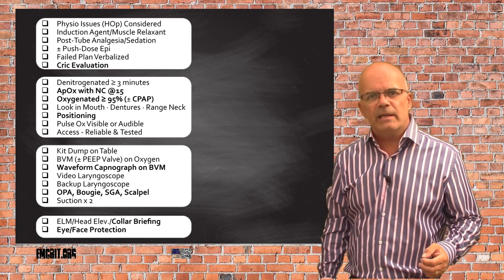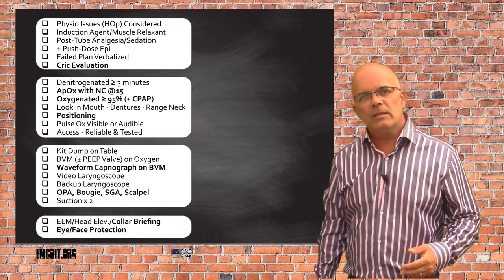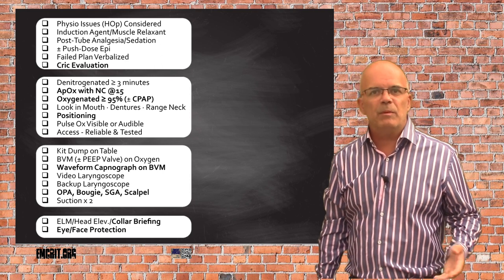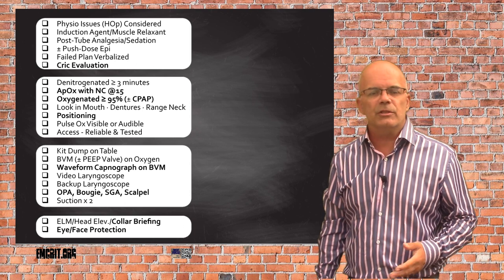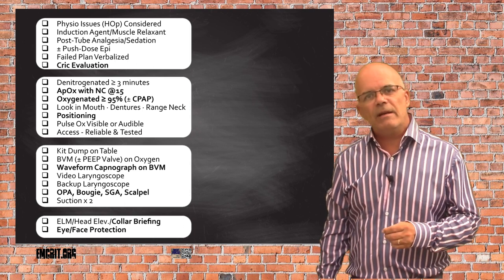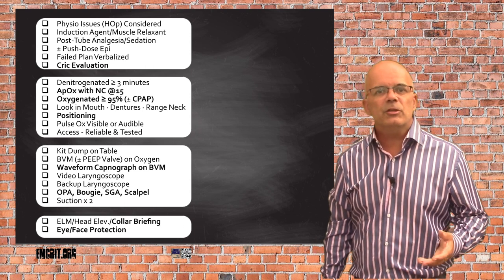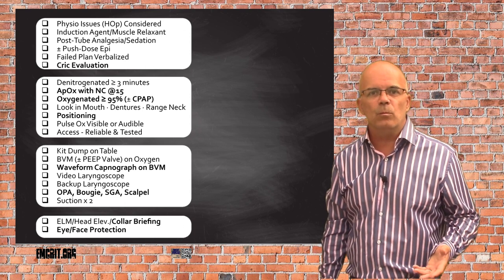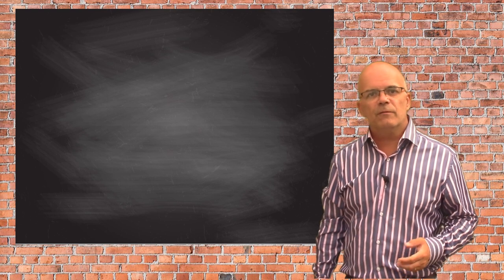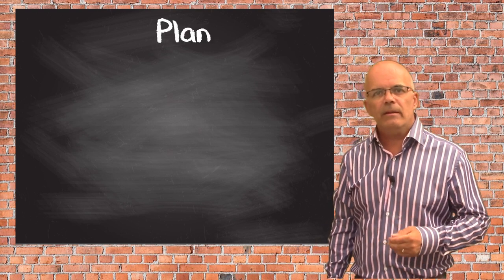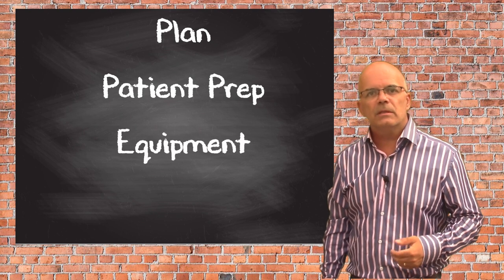The first thing to say about the checklist is that it must be readily available. It's no use having a checklist which must then be printed out. In a stressful, time-critical situation this makes no sense at all, so have a laminated copy attached to the airway trolley. This could even be made to fit in one's pocket. The checklist itself is broken down into four sections: Plan, Patient Prep, Equipment, and Team.